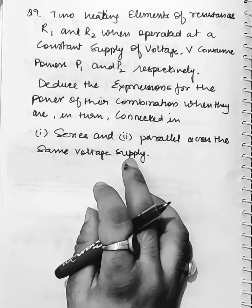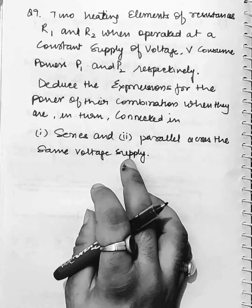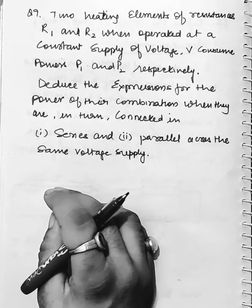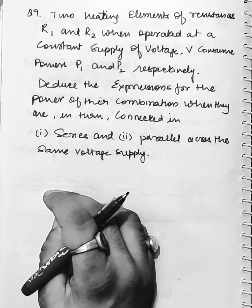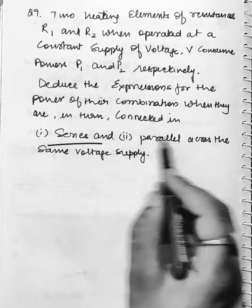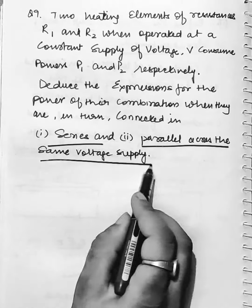Two heating elements of resistances R1 and R2, when operated at a constant voltage supply, consume powers P1 and P2. Deduce the expression for power of their combination when they are in turn connected in series and in parallel across the same voltage supply.